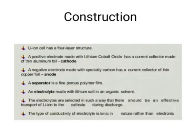The lithium-ion cell has a four-layer structure: a positive electrode made with lithium cobalt oxide with a current collector of thin aluminum foil, called the cathode; a negative electrode made with carbon with a current collector of thin copper foil, called the anode; a separator which is a fine polymer film; and an electrolyte made with lithium salt in an organic solvent.